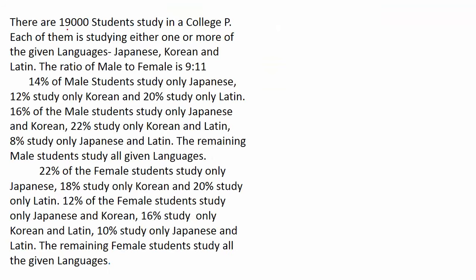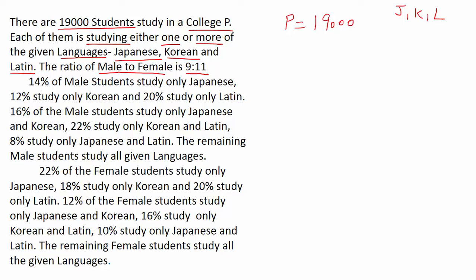There are 19,000 students studying in college P. Each of them is studying either one or more of the given languages: Japanese, Korean, and Latin. The ratio of male to female is 9:11. So total male and female ratio is 9+11 = 20. Male is 9/20 and female is 11/20.